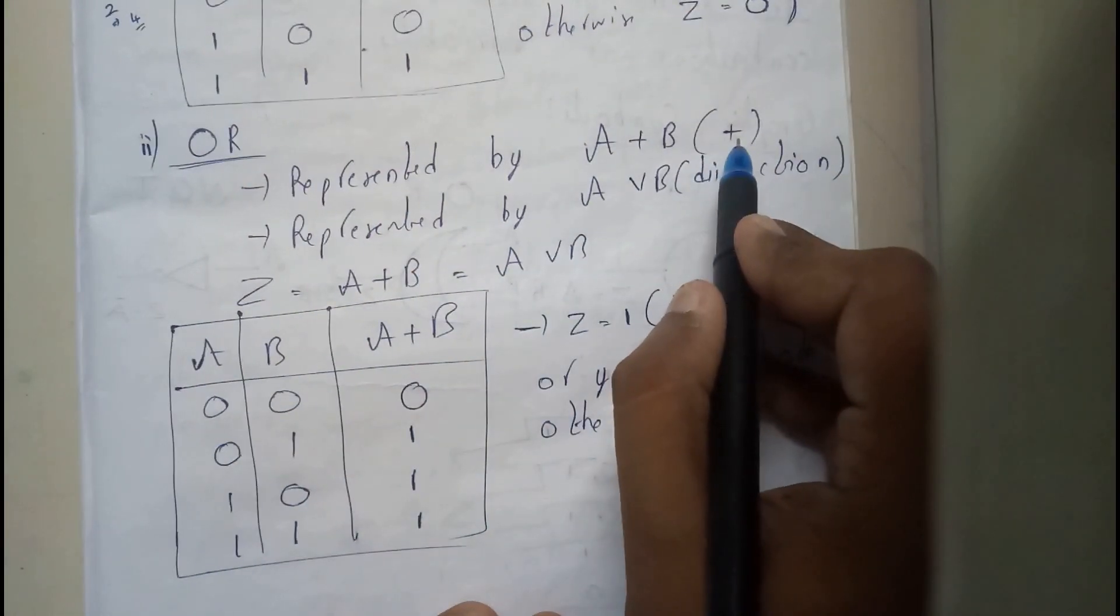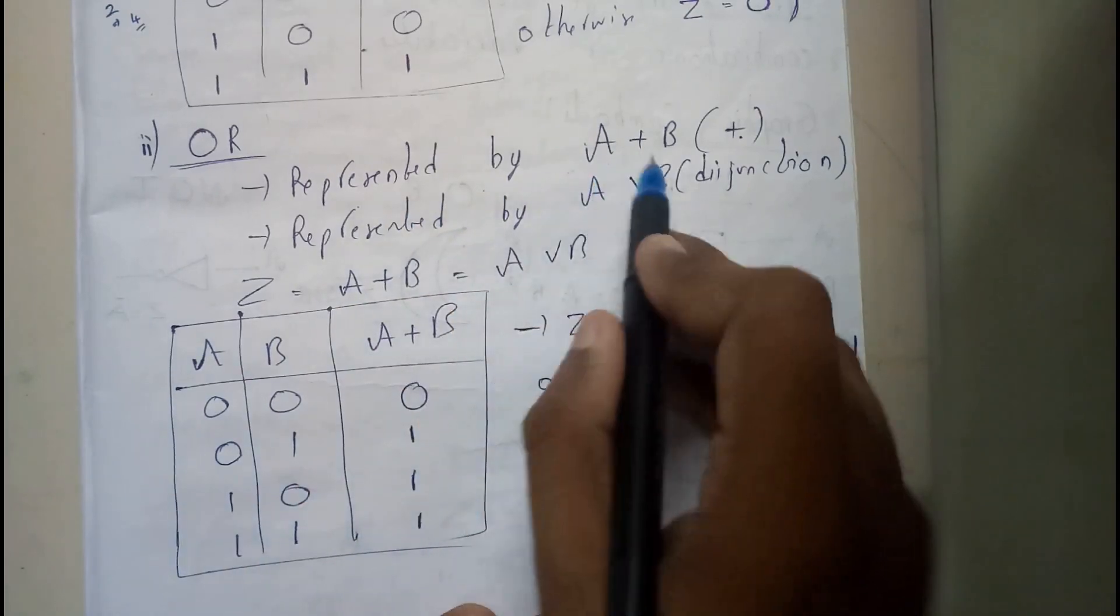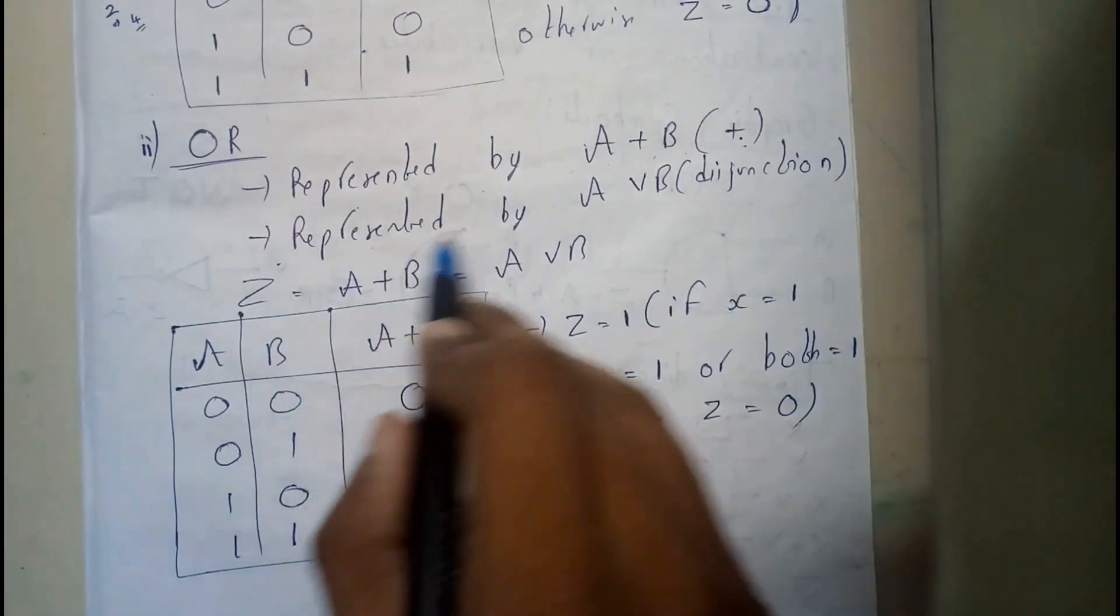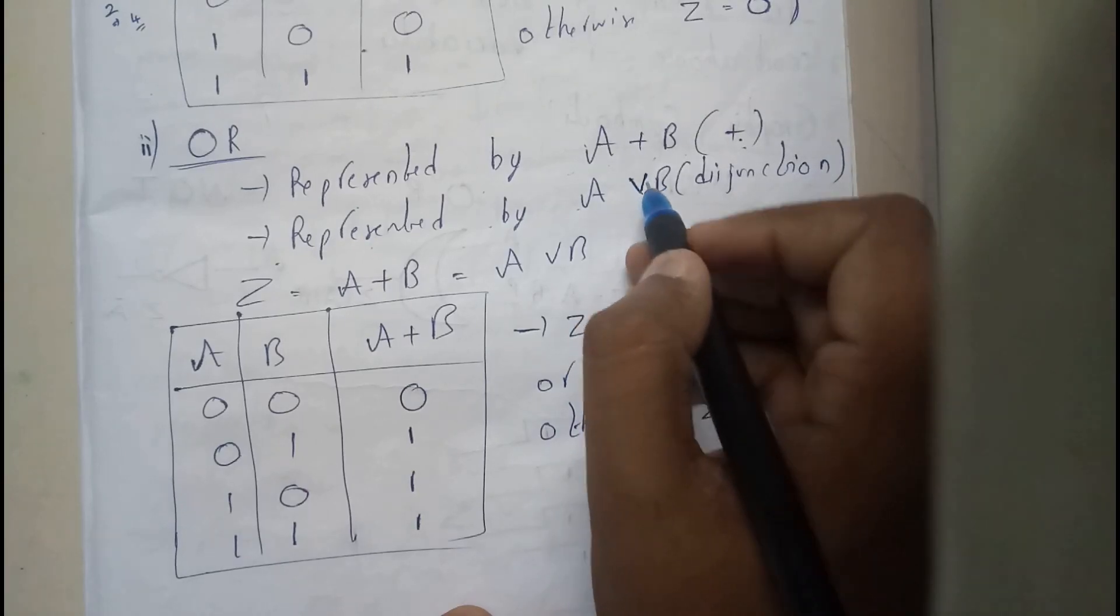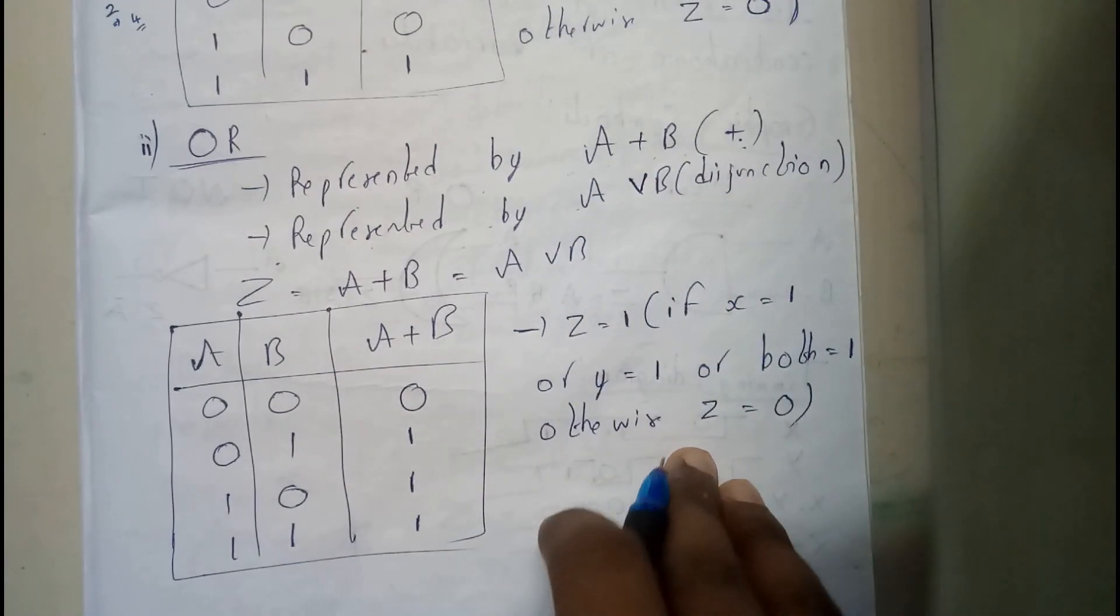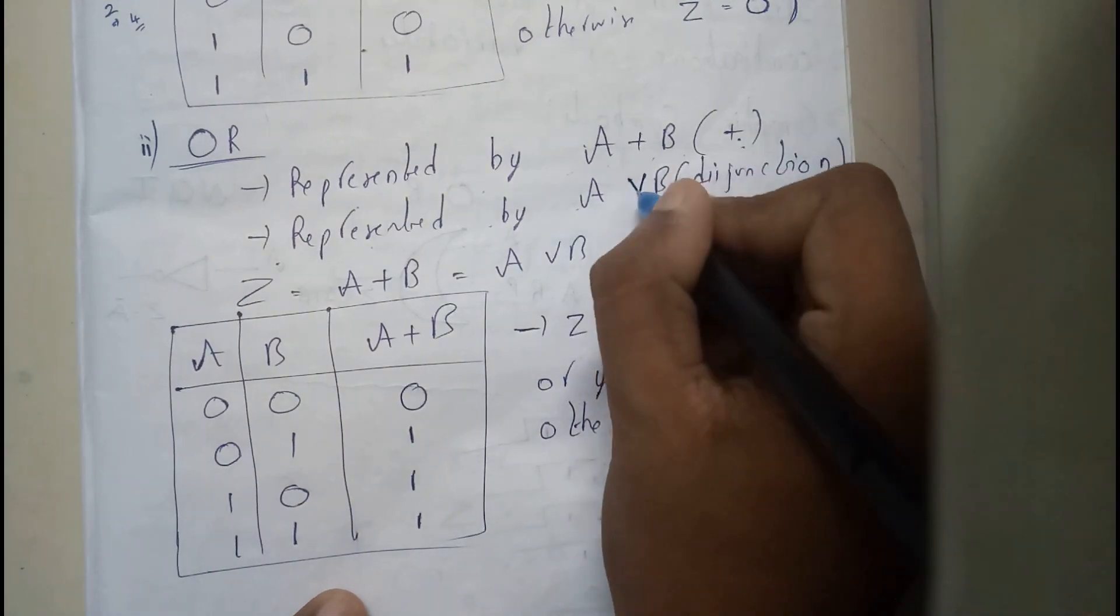Basically OR gate is represented with plus, that is nothing but addition. So represented by A plus B. It can also be represented with disjunction. Conjunction is for AND and for this it is disjunction. Disjunction is nothing but V.